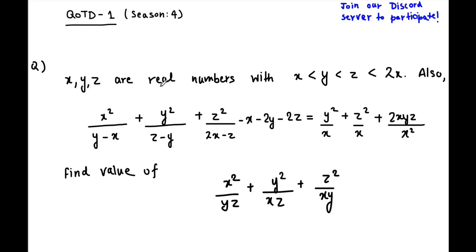Now let's have a look at the problem. The problem states that x, y, z are real numbers with x less than y less than z less than 2x. Also, x squared upon y minus x plus y squared upon z minus y plus z squared upon 2x minus z minus x minus 2y minus 2z equals y squared upon x plus z squared upon x plus 2xyz upon x squared. We are asked to find the value of this expression which is given here.